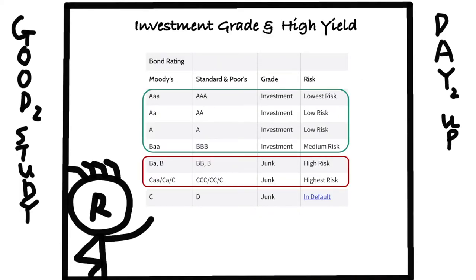To demonstrate how the strategy works, let's look at the spread between high yield bonds, also known as junk bonds, and investment grade bonds, also known as IG bonds. From the table below, we can see the definition of junk bonds and IG bonds. Generally speaking, junk bonds are riskier than IG bonds, so we can expect junk bonds to pay a higher yield than IG bonds.